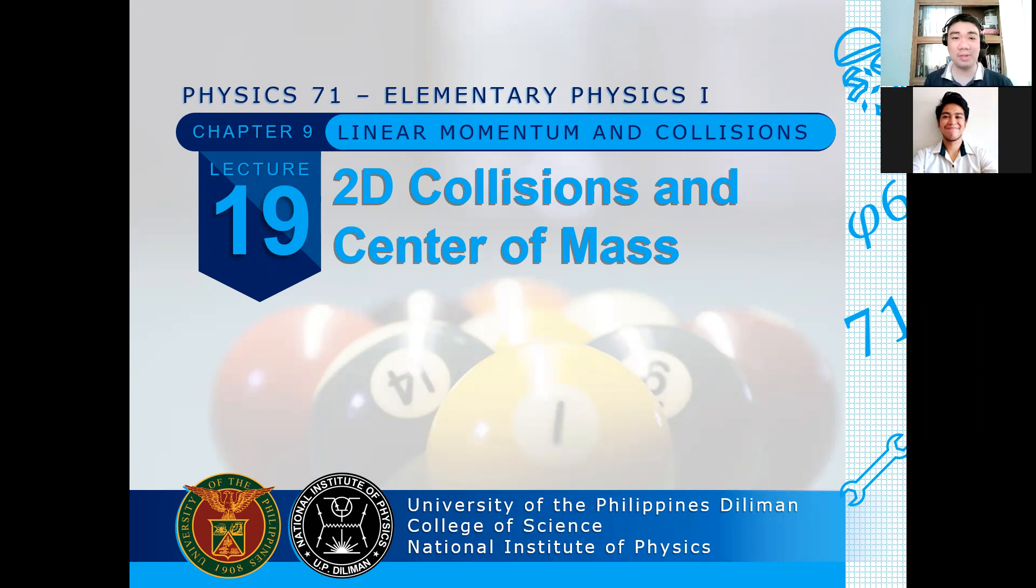For today, we will be discussing 2D collisions. Last time we discussed 1D collisions, focusing on perfectly inelastic collisions and elastic collisions. We differentiated the different types of collisions. For all collisions, momentum is conserved, or more specifically, momentum is to a good approximation conserved.